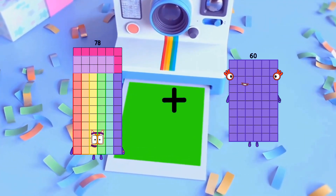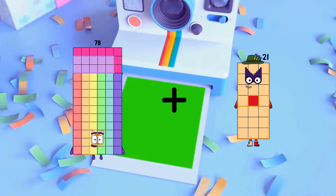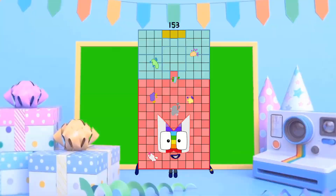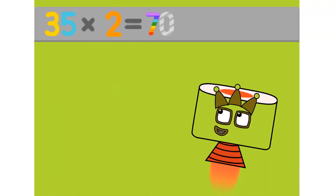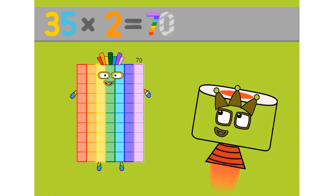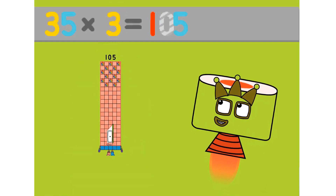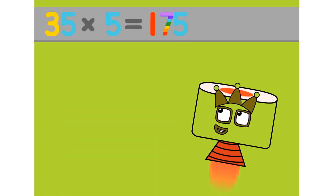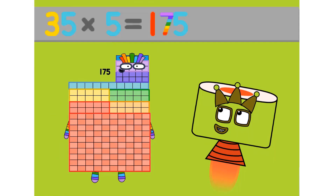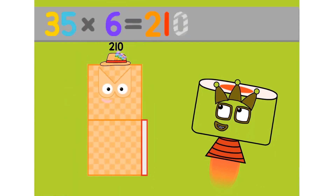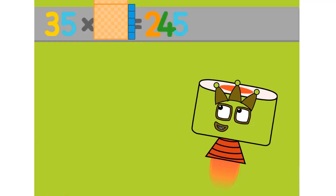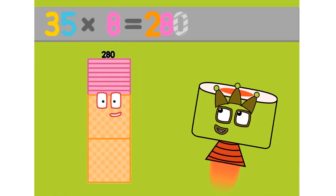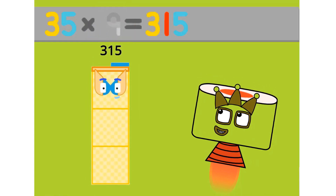78 plus 75 equals 153. 35 times 1 equals 35. 35 times 2 equals 70. 35 times 3 equals 105. 35 times 4 equals 140. 35 times 5 equals 175. 35 times 6 equals 210. 35 times 7 equals 245. 35 times 8 equals 280. 35 times 9 equals 315.